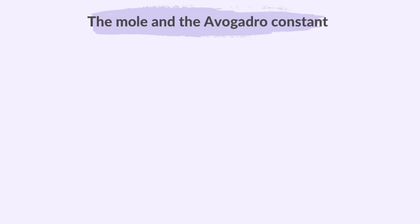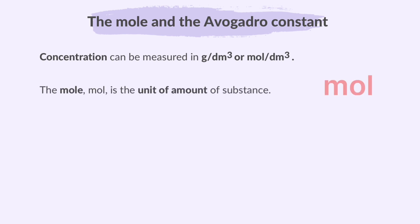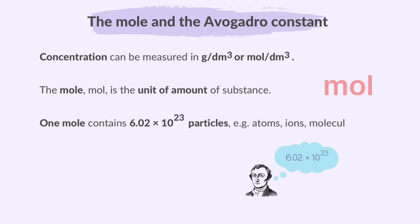Next, the mole and the Avogadro constant. Concentration is how much of something is mixed in a liquid — it helps us understand how strong or diluted a solution is. Concentration can be measured in grams per dm³ or moles per dm³. The mole is the unit of amount of substance; it's a unit used to count atoms, molecules, or particles.